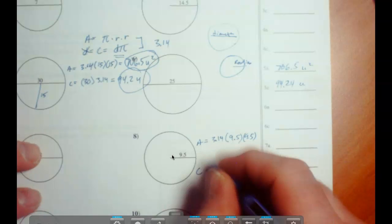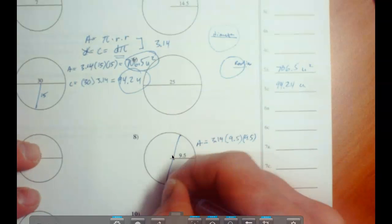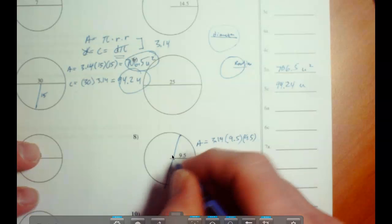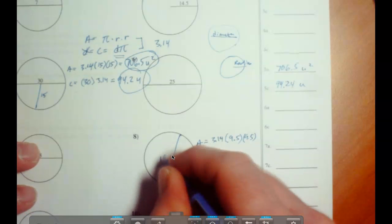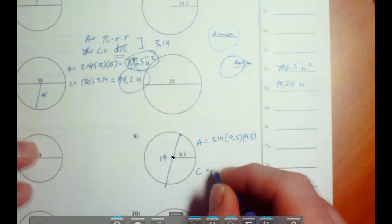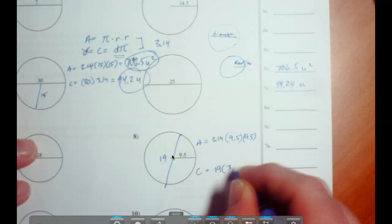Your circumference, we've got to have the diameter, so we're going to double that. 9.5 times 2 in your calculator is going to tell you that it's 19. So that'll be 19 times pi, which is 3.14.